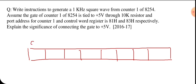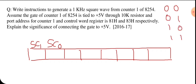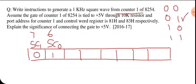The top two bits D7 and D6 are called SC1 and SC0, used to select the counter. If these are 00, it selects counter 0; 01 selects counter 1; 10 selects counter 2; and 11 selects the control word. In this question we are using counter 1, so the value of SC1 SC0 is 0 1 — so bit 7 is 0 and bit 6 is 1.